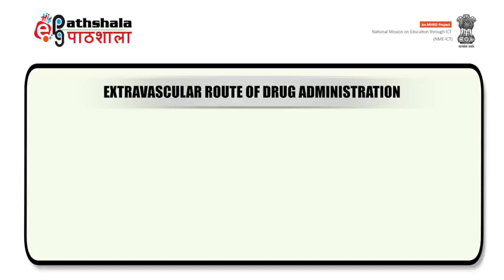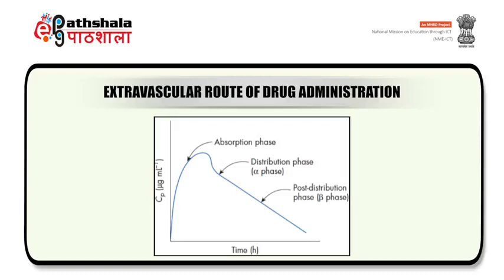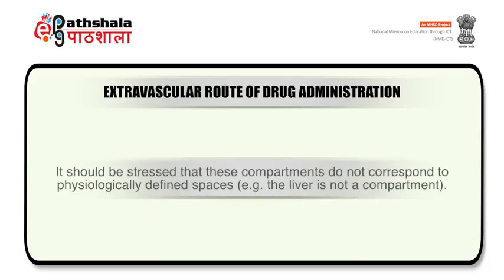Coming to the extravascular route of drug administration: the figure shows three phases in the plasma concentration versus time data when the drug is administered by an extravascular route. Those three phases are absorption, distribution, and post-distribution. There is a clear and recognizable distinction between the distribution and post-distribution phases. The plasma concentration versus time profile in the post-absorption period appears identical to that of the intravenous bolus two compartment model. These data can therefore be described accurately by employing a two compartment model, and the equation will contain three exponential terms — one for each phase: absorption, distribution, and post-distribution.